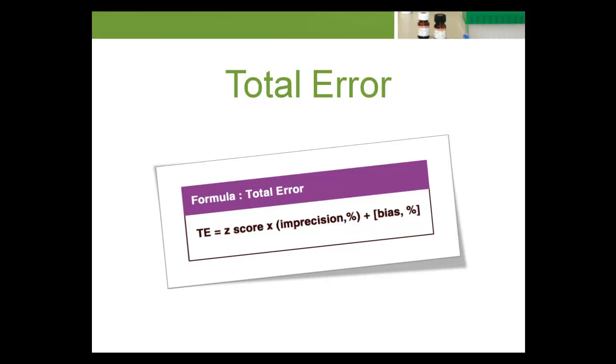The Total Error formula consists of three components: z-score, imprecision, and bias. We'll examine each of these components in more detail.